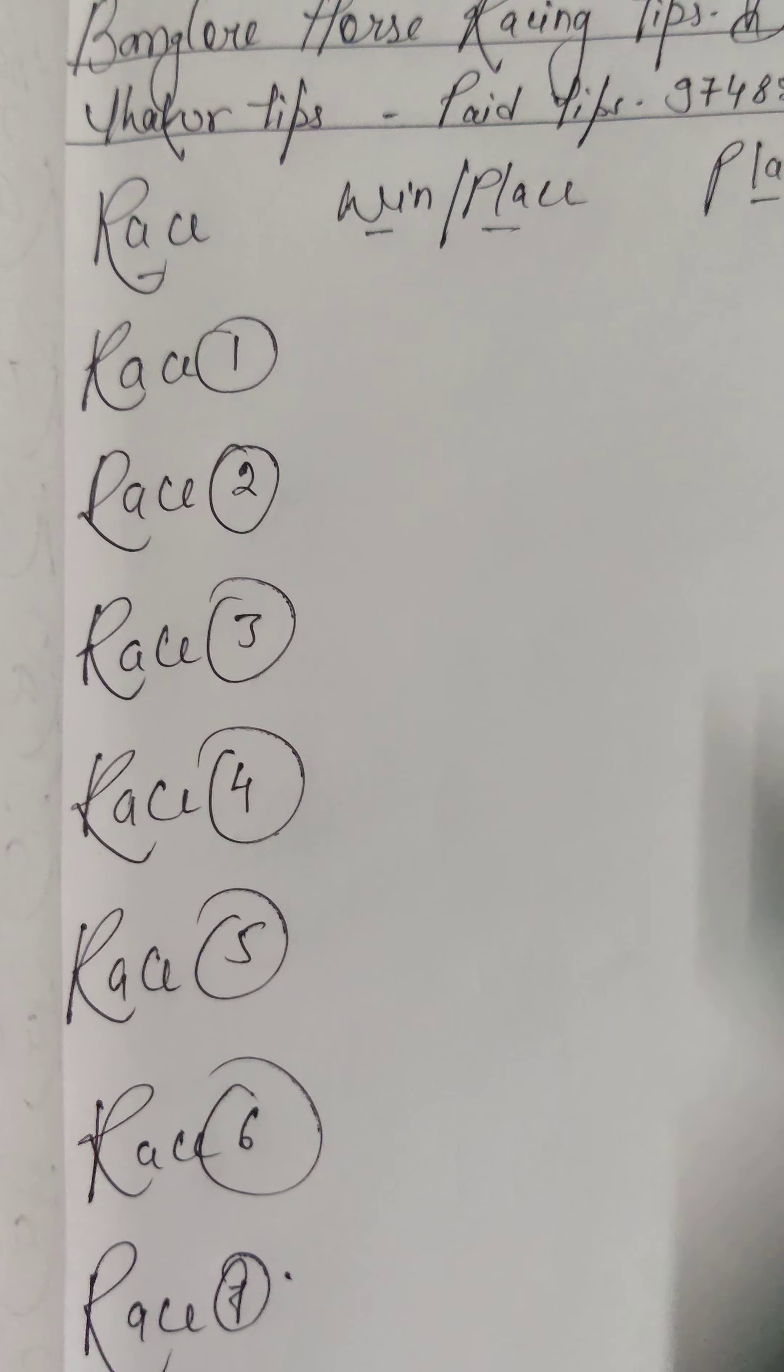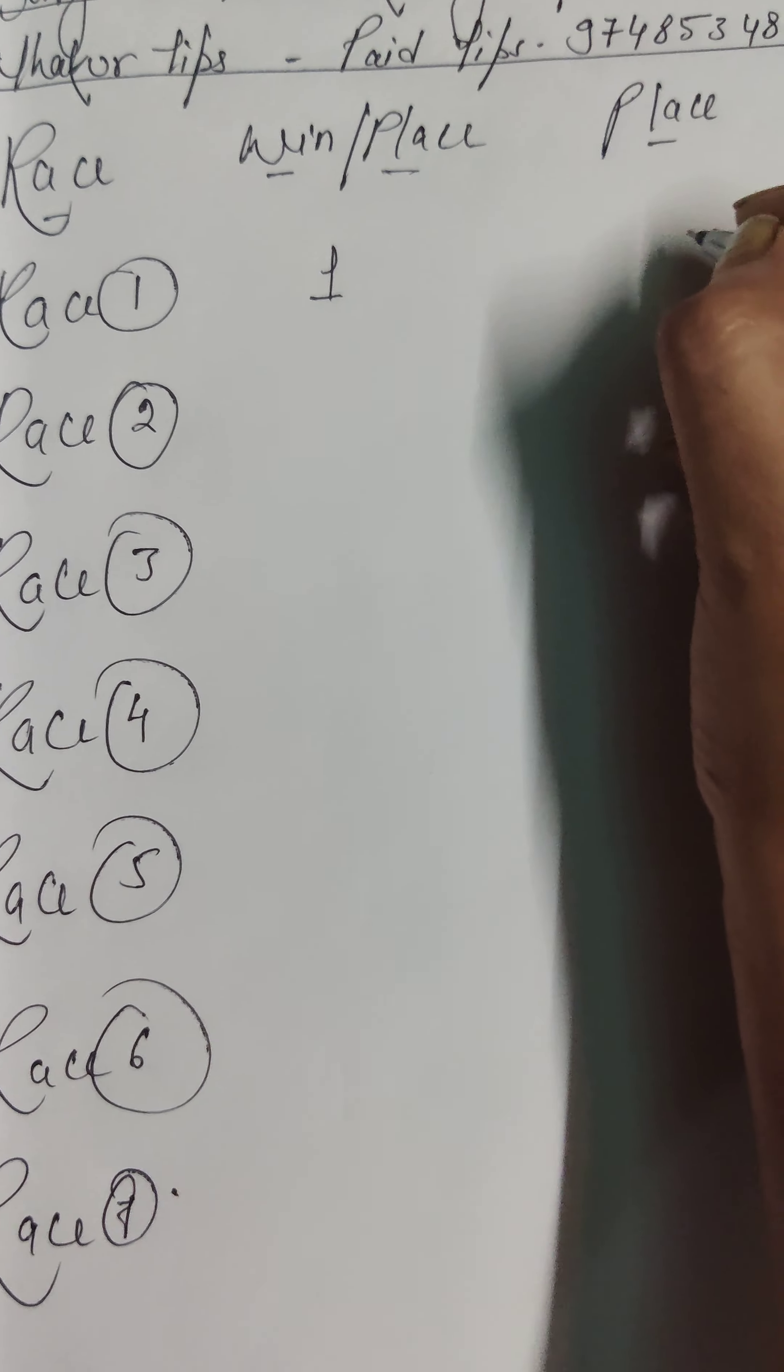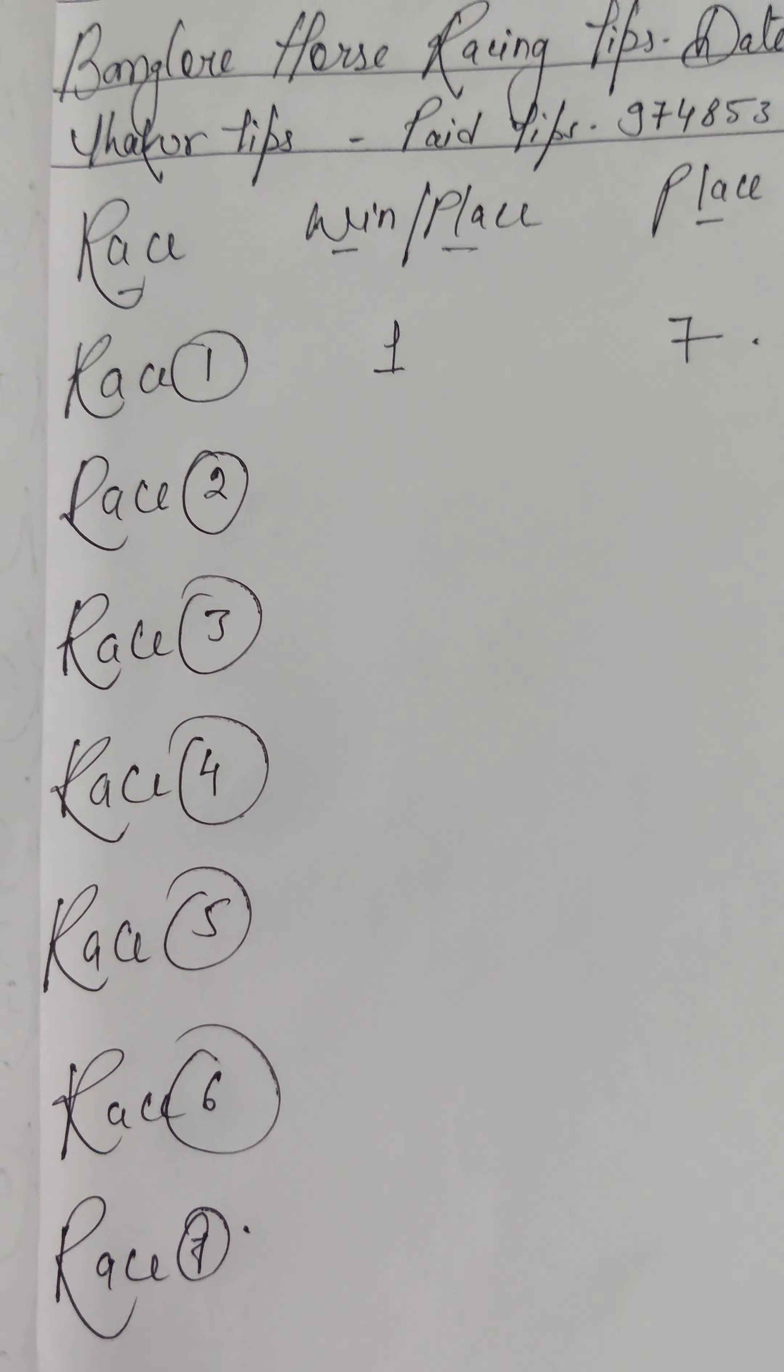Race number 1, here my first choice is horse number 1. My second choice is horse number 7, 1 and 7.